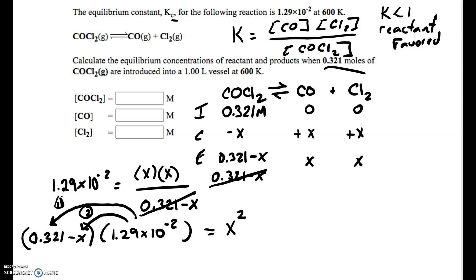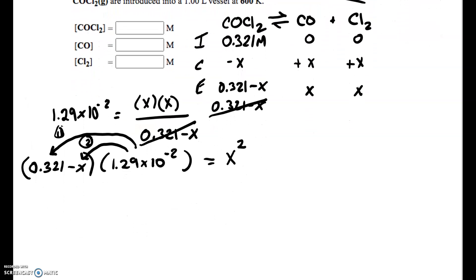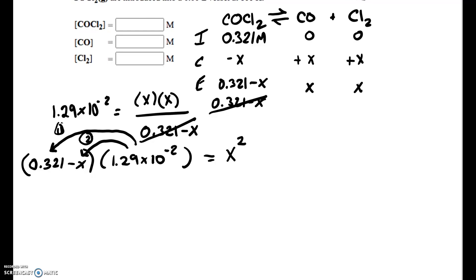So 1.29 times 10 to the minus 2 times 0.321 is 0.0041409. And we're going to keep a few extra digits and round to our significant figures at the end. Okay. So what I did there is I went 1.29 times 10 to the minus 2 times 0.321. Now I have to multiply times negative X. And that's just simply going to be negative 1.29 times 10 to the minus 2 X. And this equals X squared.